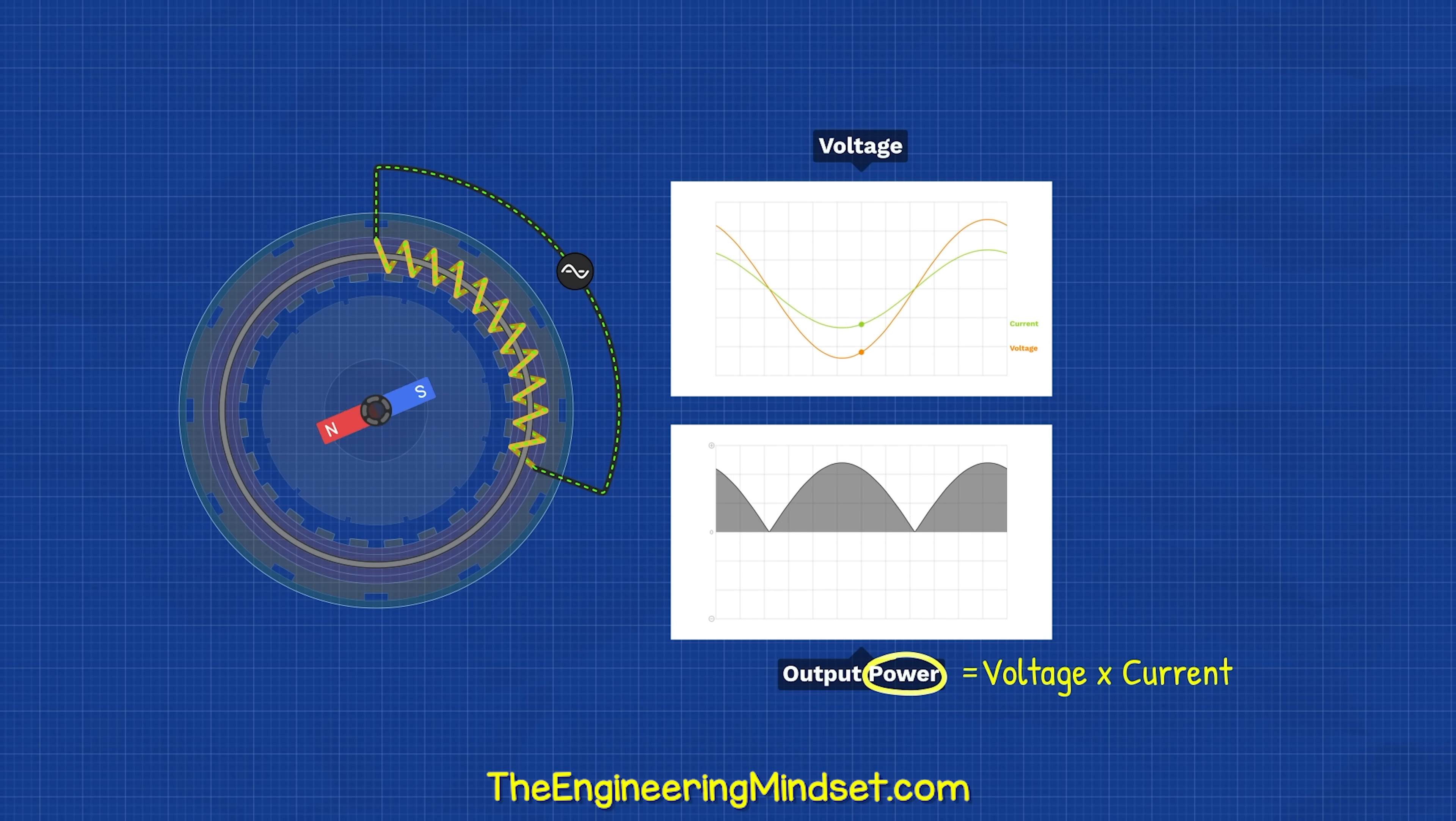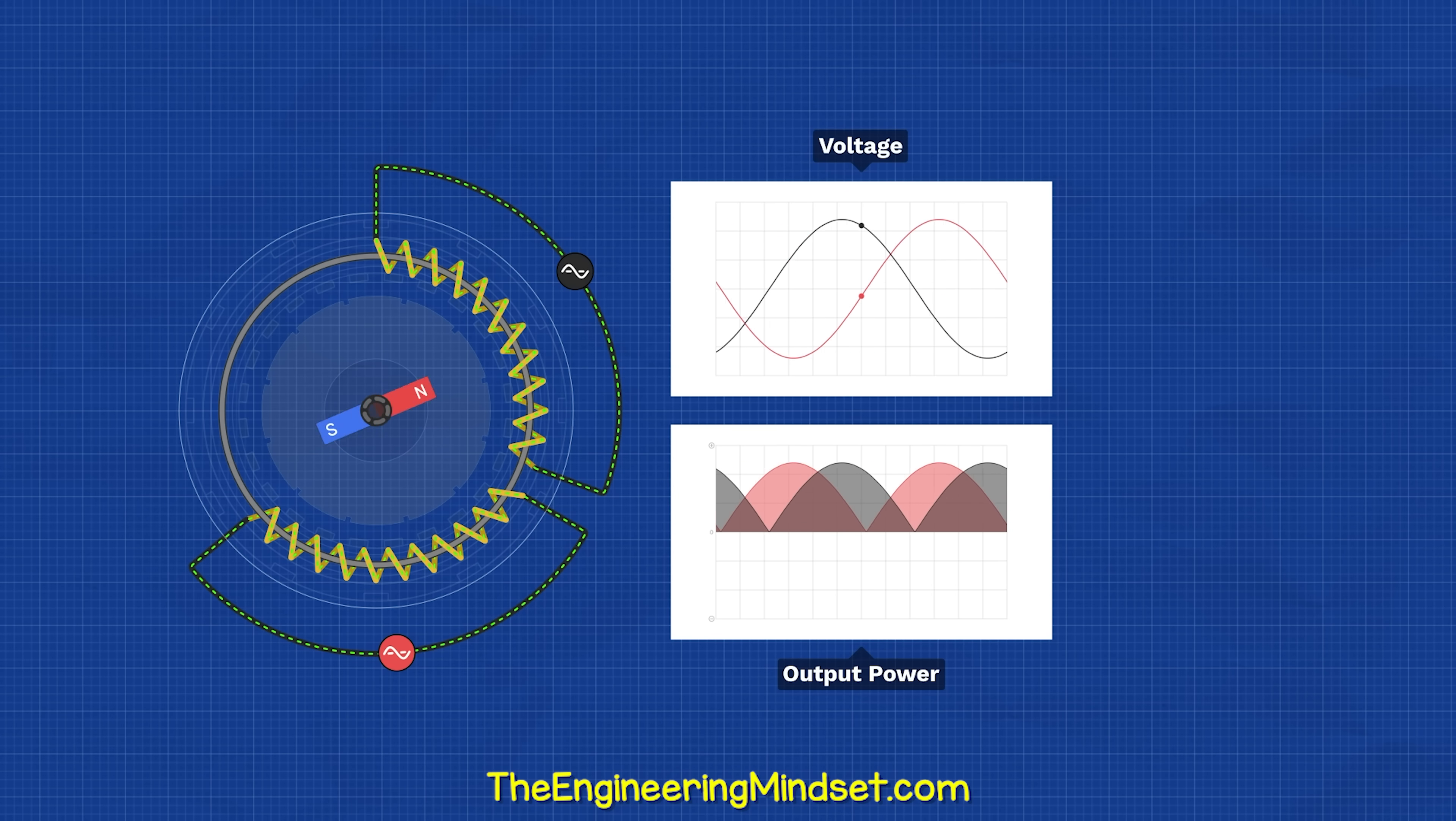If we look at the output power of this generator, we can see it's not constant because of the sine wave. If we added another separate coil to the stator and positioned this 120 degrees away, then the coil will experience the change in magnetic field at a different time to the first coil. The voltage generated by the coil will increase and decrease at a different time, so the sine wave will be delayed. This gives us two phases. We can see this will improve the output power, but there's still a gap.